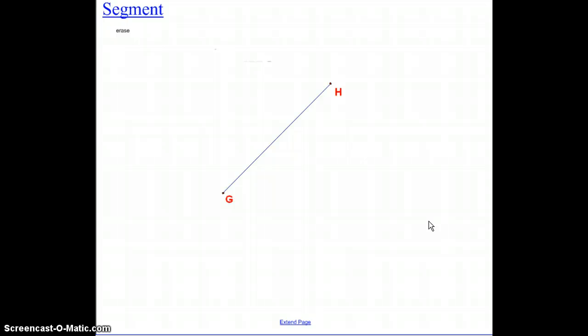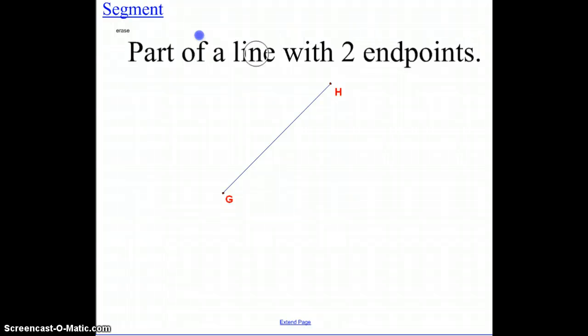Alright, next we have a segment, and a segment is part of a line with two endpoints, noting that arrows on the ends change to actual points. And when we want to label the segment, it's very similar to a line, except we're using the two endpoints. And the symbol above it looks exactly like a segment. Again, we can interchange the endpoints, but you always pick the two endpoints, and always using capital letters, because again, points are represented by capital letters.